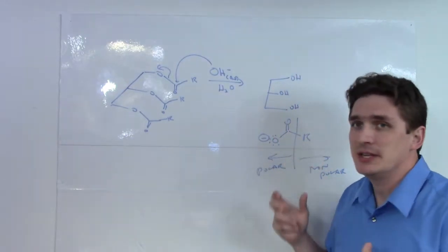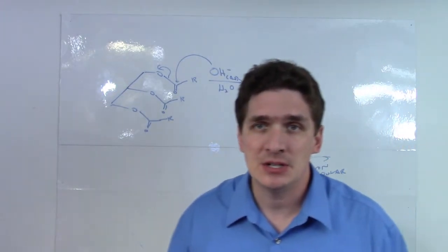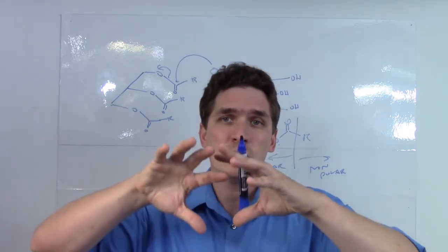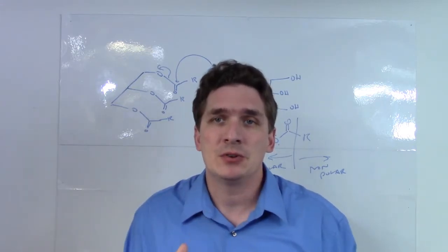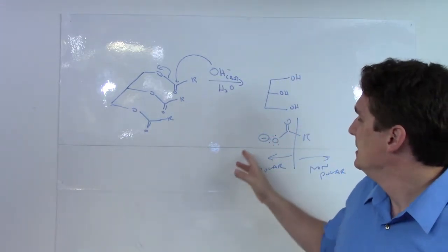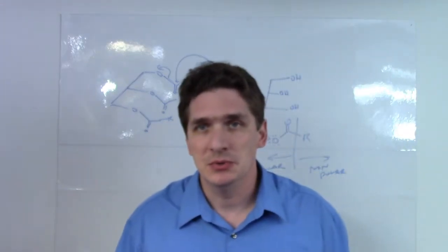We have one part of the molecule which attaches to organic materials that aren't soluble in water and forms this micelle, this protective wrapping around it. On the outside of this wrapping is the polar component, which is soluble in water.